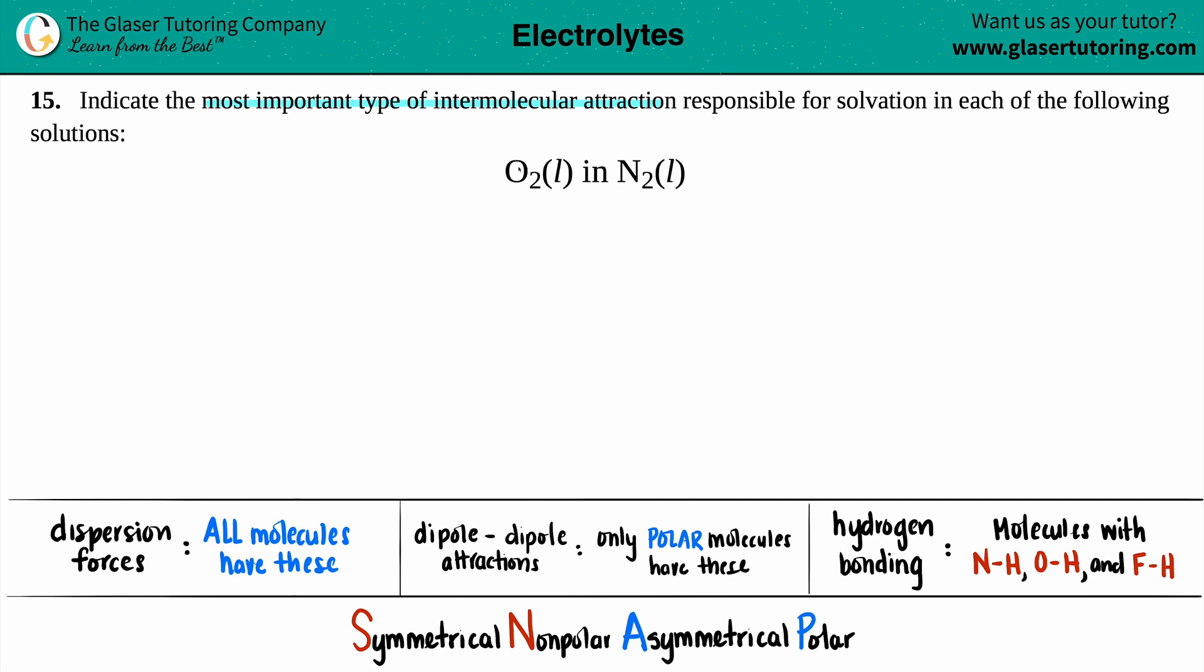We have O2 in liquid form, which is in N2, which is also in liquid form. Solvation is basically just talking about when the solvent is able to dissolve the solute. If you have a compound that is in another compound, the first one is always going to be your solute and what you're dissolving it in is going to be your solvent.